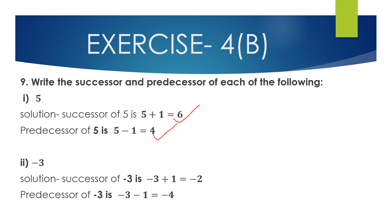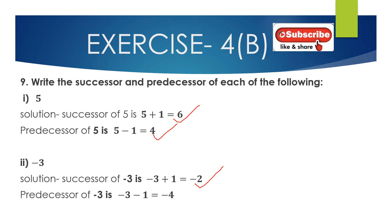Second: integer −3. Successor of −3 = −3 + 1 = −2. We subtract smaller integer 1 from larger integer 3: 3 − 1 = 2, and since 3 carries a negative sign, we get −2. Predecessor of −3 = −3 − 1 = −4. So successor requires adding 1 and predecessor requires subtracting 1 from the integer.